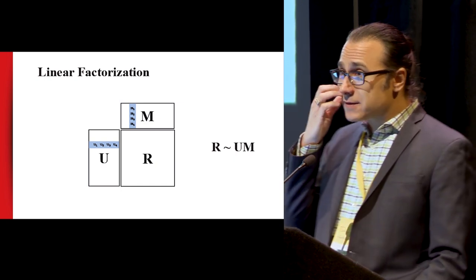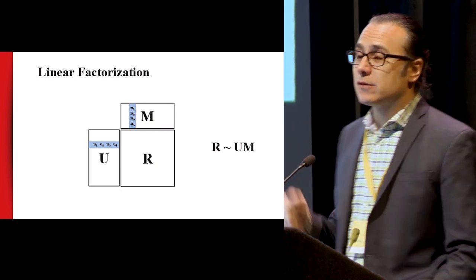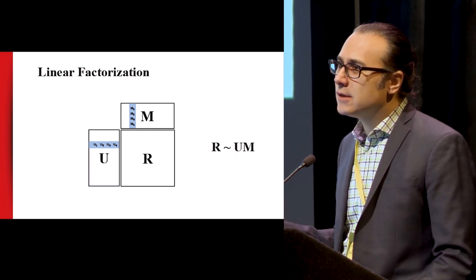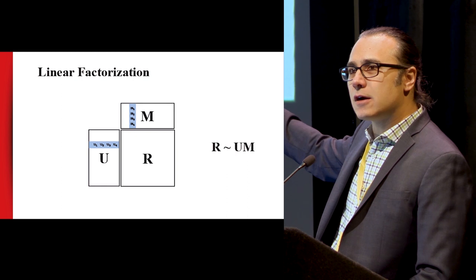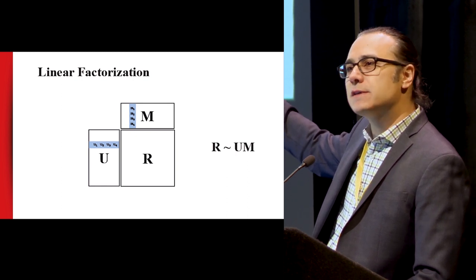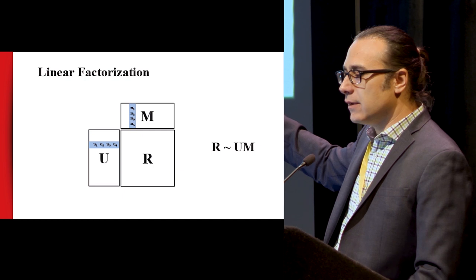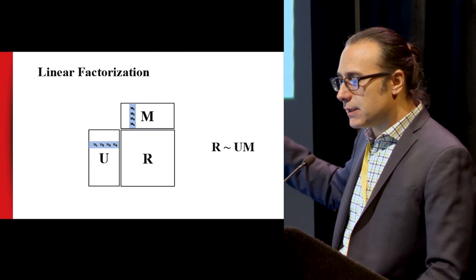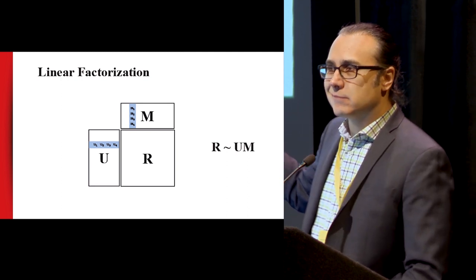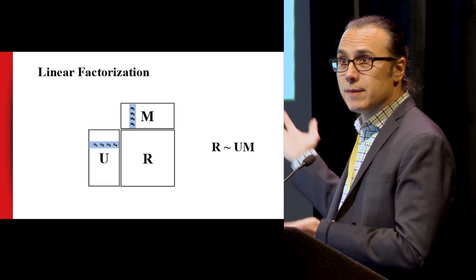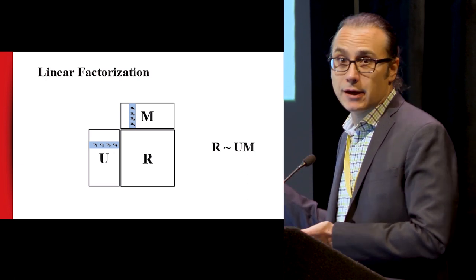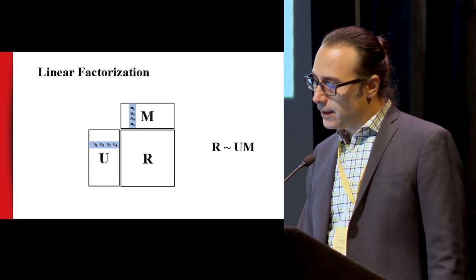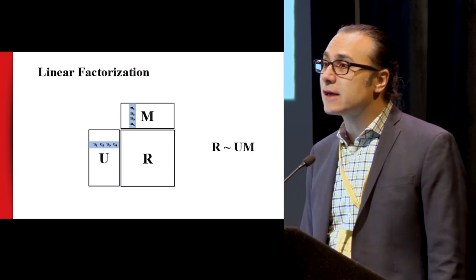The classic approach in 2006 was linear matrix factorization. You take that ratings matrix R and figure out how to rewrite it as a product of two skinny matrices, U and M — where U might be four by a million and M might be four by 100,000. You take the product of those two things and make this giant matrix, which is a million by 100,000. If you figure out how to rewrite R approximately as U times M, that gives you an idea of how to fill in the missing entries of R.